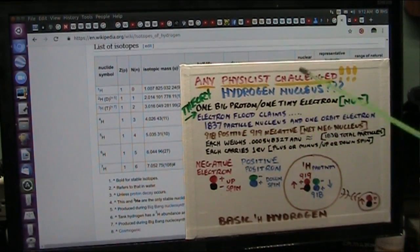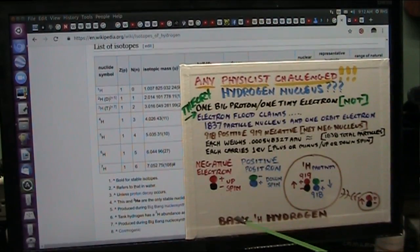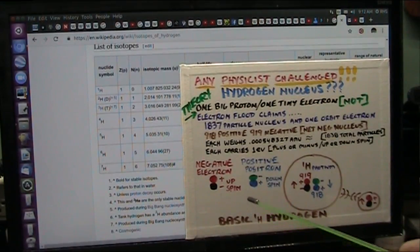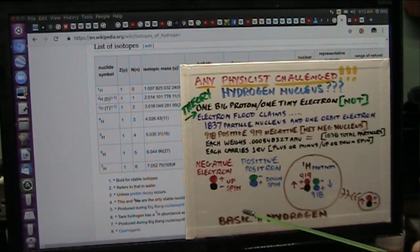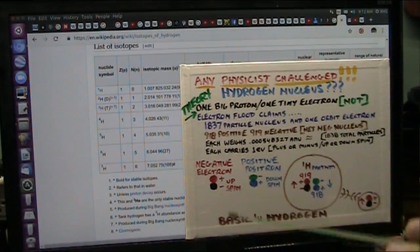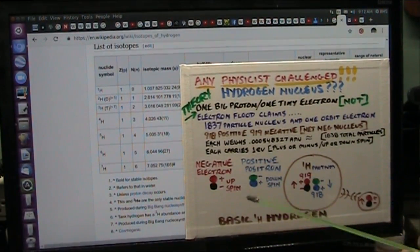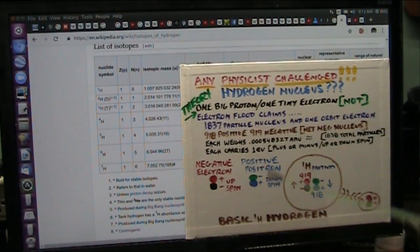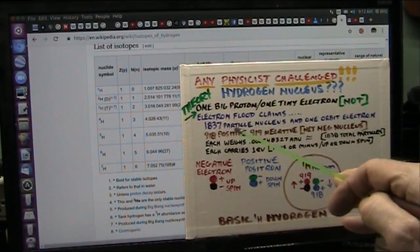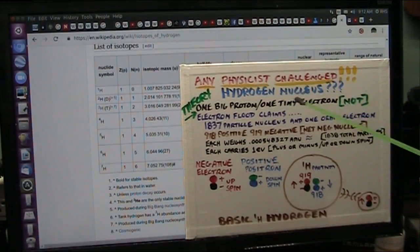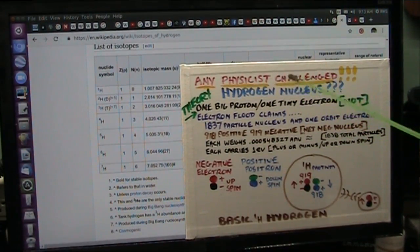Electron flood theory claims that in those particles, in every atom, there is only a couple of particles. There's only the up spin and the down spin electrons. And that's what they are. There's an electron up and there's a positron down. They're the same weights, the same charges, only they're opposite. So what does that mean to a hydrogen nucleus? It means that there is 1837 particles in that nucleus. And it does weigh out, everything weighs out exactly what I'm talking about.